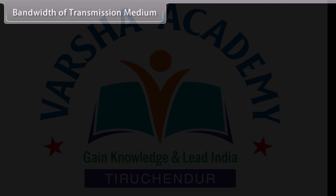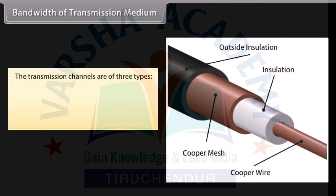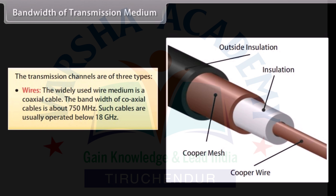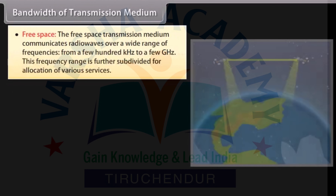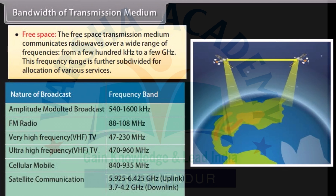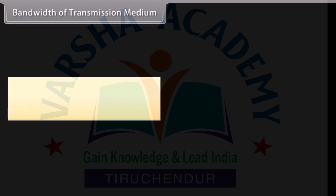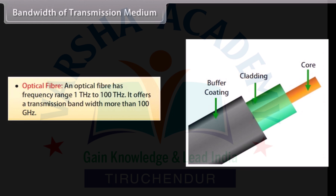Bandwidth of transmission medium: The transmission channels are of three types. Wires — the widely used wire medium is a coaxial cable; the bandwidth of coaxial cables is about 750 megahertz, usually operated below 18 gigahertz. Free space — communicates radio waves over a wide range of frequencies from a few hundred kilohertz to a few gigahertz, further subdivided for allocation of various services. Optical fiber — has a frequency range of 1 terahertz to 100 terahertz and offers a transmission bandwidth of more than 100 gigahertz.